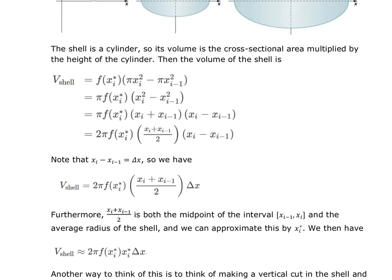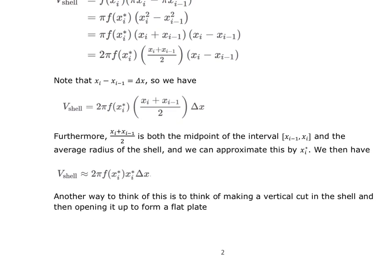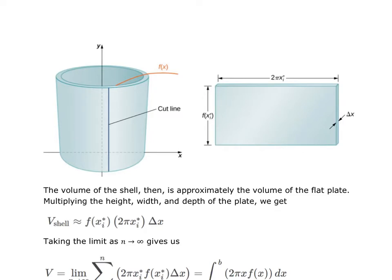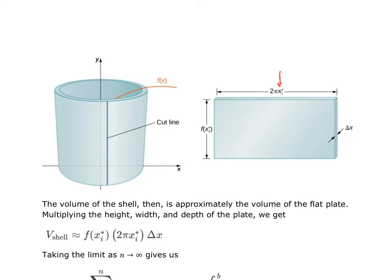The volume is approximately f(xᵢ) for each piece — that's the radius. The shell is approximately the circumference of our shape multiplied by the height at any given time. The circumference equals 2πr, where r is whatever our radius is — in this case, x, though it's not always going to be x. The height is based on the function itself, and then it has some depth, giving us the volume of that particular shell.